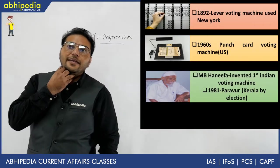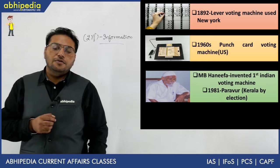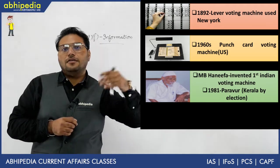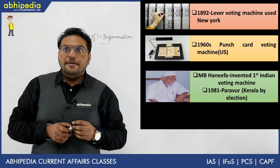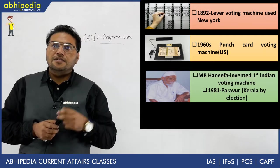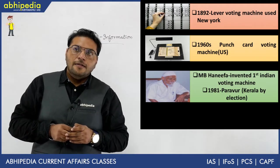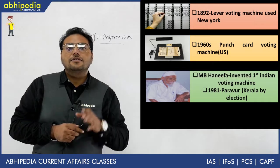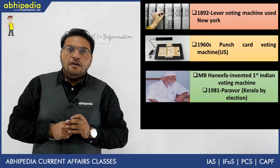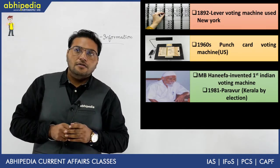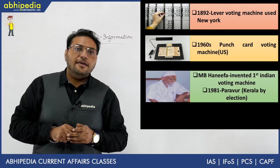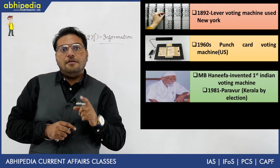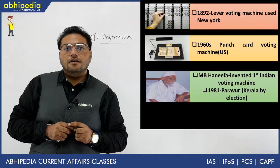Now I will discuss the history of EVM. The first lever voting machine was used in New York in 1892. Then in 1960, a punch card voting system was used in the US. In India, MB Hanifa invented an Indian voting machine. In 1981, the first EVM by the Election Commission was used in Parahur, Kerala.